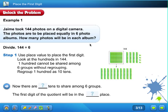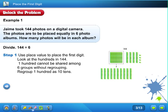So let's see what the question is asking me. How many photos will be in each album? How many albums were there? There were six photo albums. And how many photos do we have? We have 144. All right, so what we're going to divide is 144 divided by the six photo albums. So Step 1: Use place value to place the first digit.